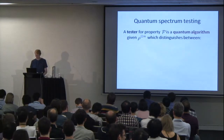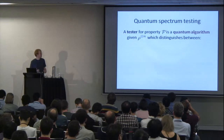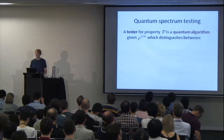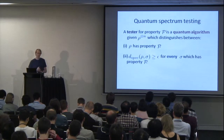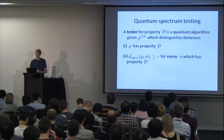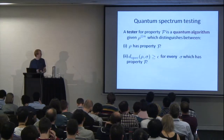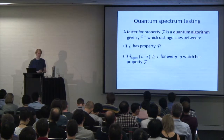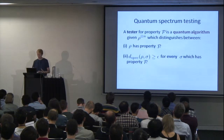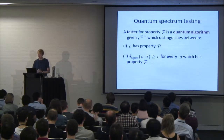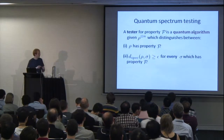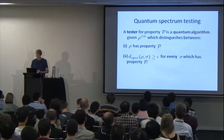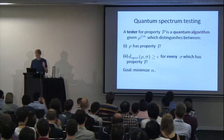In quantum spectrum testing, we have a tester for some property P — a quantum algorithm — which, given n copies of the mixed state rho, must distinguish two cases: output yes when rho has property P, or output no when the unknown mixed state is at least epsilon far from every sigma which satisfies P in this spectral distance. The goal is always to minimize n, the number of copies used. Another way of looking at the second condition is that no matter how you rearrange an epsilon fraction of the spectrum, you'll still not satisfy the property.